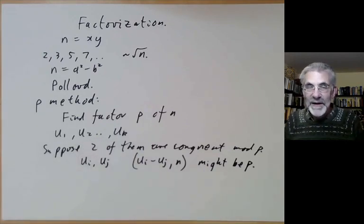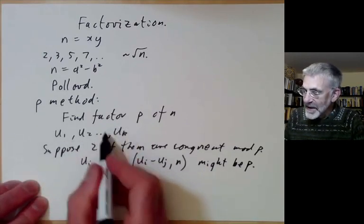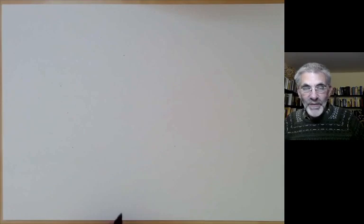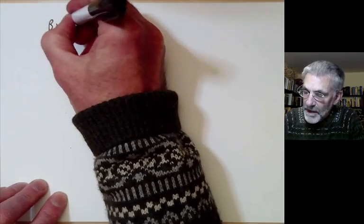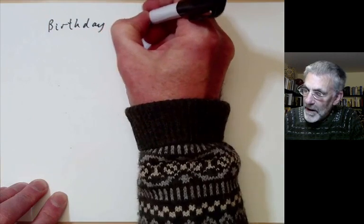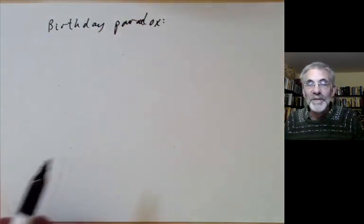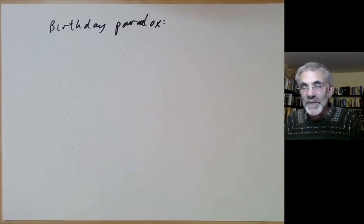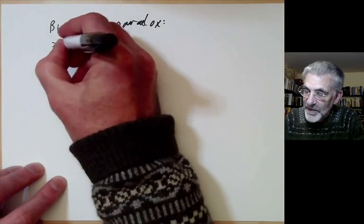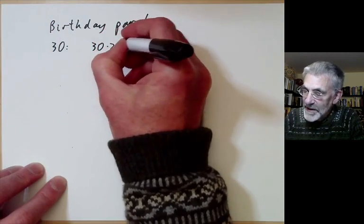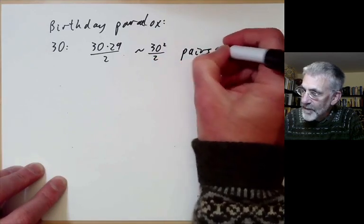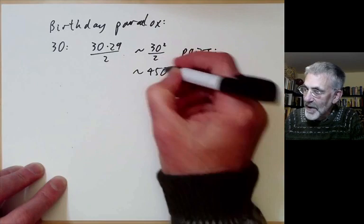First of all, how many numbers k do you need to take in order to have a reasonable chance of having two of them congruent mod p? For this we recall the birthday paradox, which says if you have about 30 people in a room, there's a pretty good chance that two of them have the same birthday, which is quite surprising at first sight. But if you've got 30 people, that means there are going to be about 30 times 29 over 2, which is about 30 squared over 2 pairs.